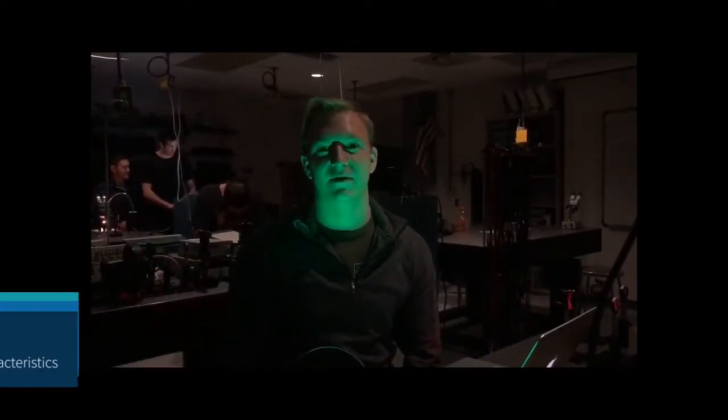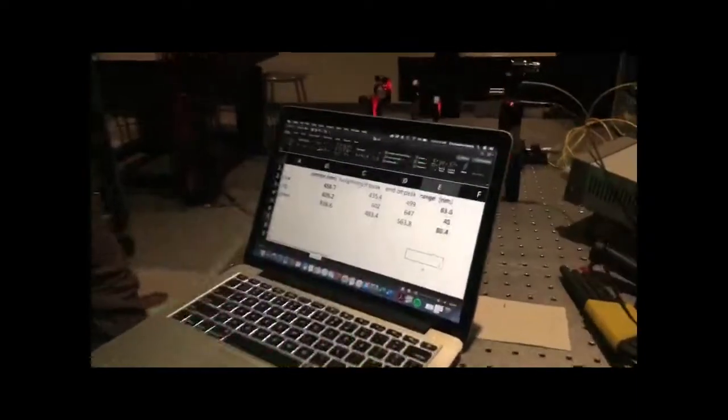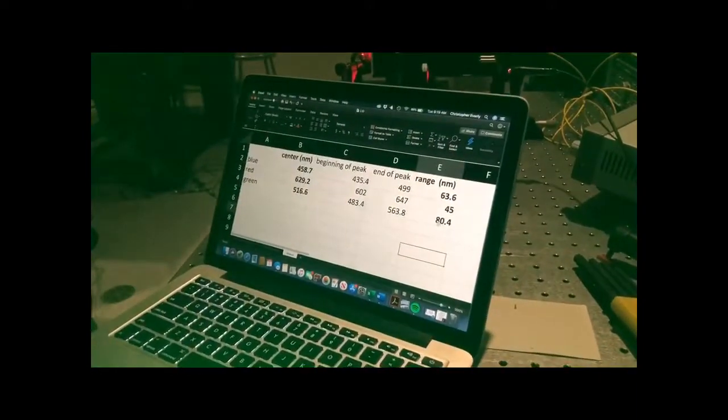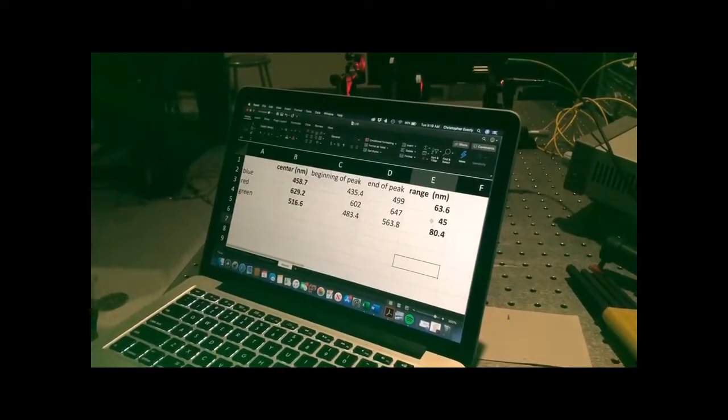We used the optical spectrum analyzer to analyze the spectrum of the green, blue, and red LEDs. We found the center wavelengths of the red, green, and blue LEDs, and that the green LED had a much longer range than the red LED.